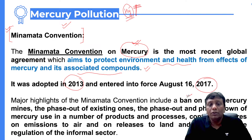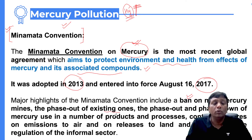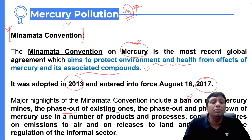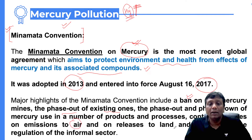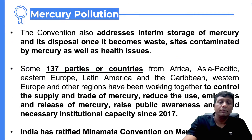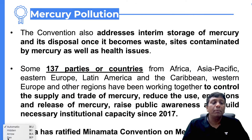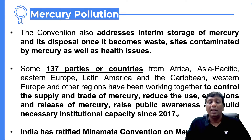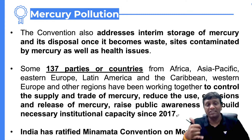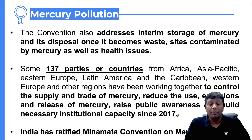The Minamata Convention was adopted in 2013 and came into force in 2017. Under the convention, there is a ban on new mercury mines. Existing mines will be phased out slowly and gradually. The use of mercury will be reduced in a cascading manner, thereby reducing emissions of mercury in air, land, and water. In many places, people are using mercury anthropogenically — for example, in thermometers and sphygmomanometers used for blood pressure measurements. Digital thermometers and digital BP measurements are available as alternatives.